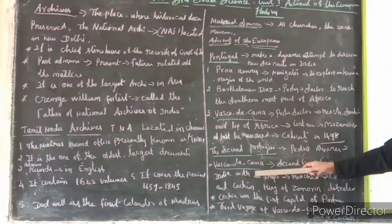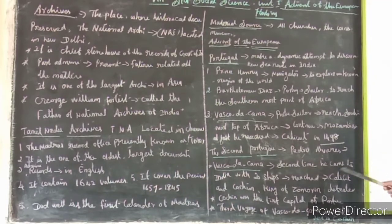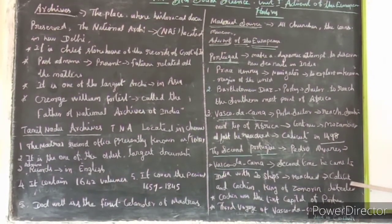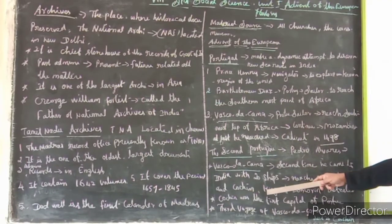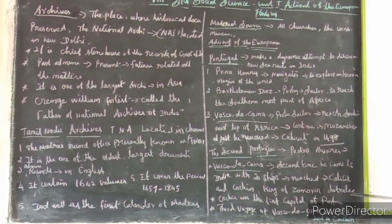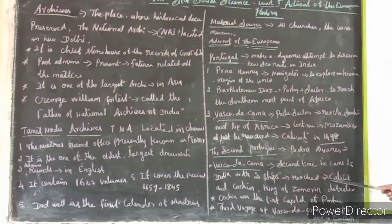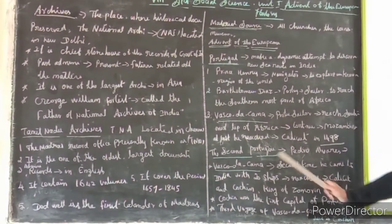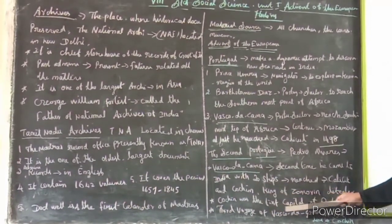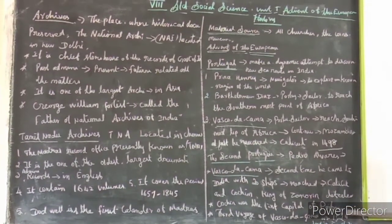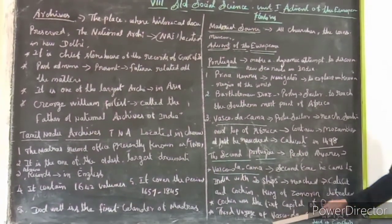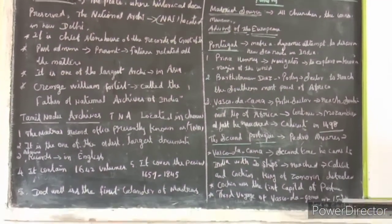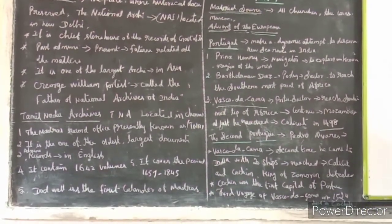The second voyage of Vasco da Gama came to India with twenty-six ships and reached Cochin. The King of Calicut opposed them, so they occupied Cochin. Cochin was the first place to develop Portuguese influence. The third voyage of Vasco da Gama was in 1524 to Cochin, where he later died in Cochin.